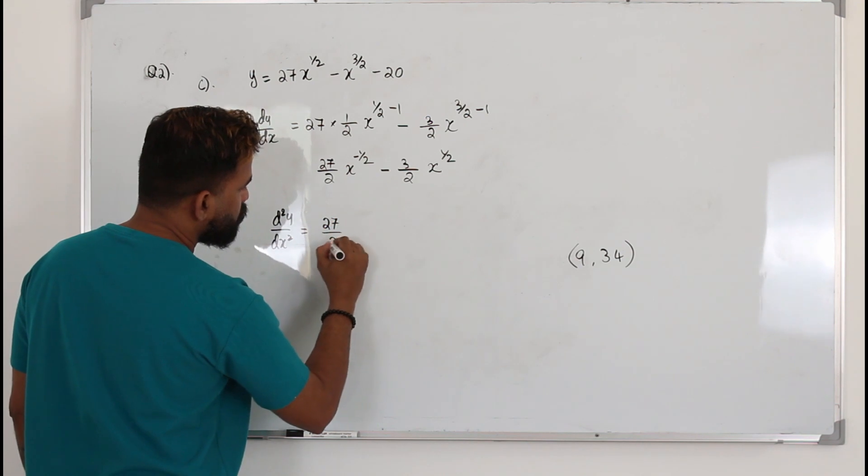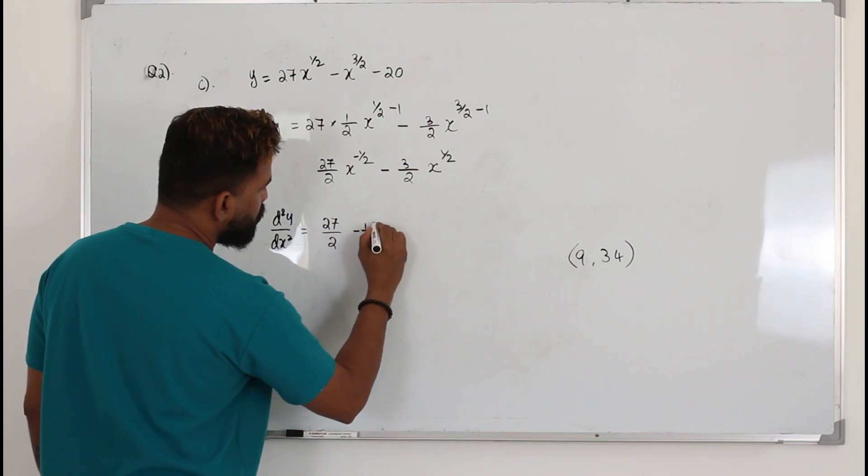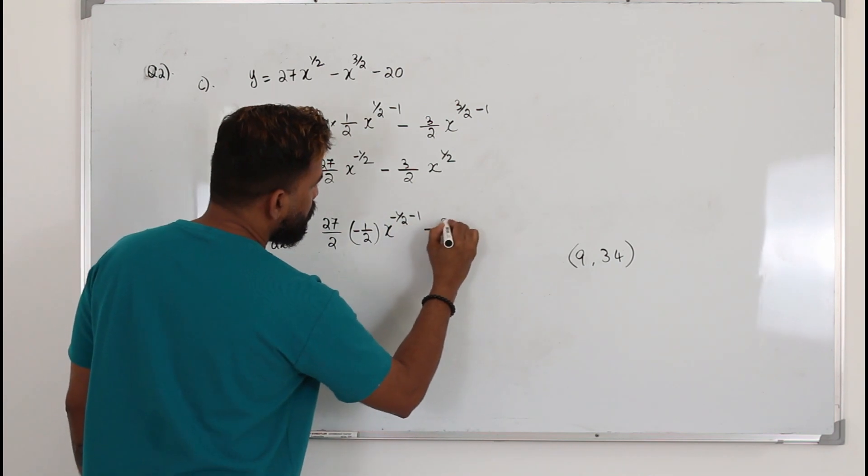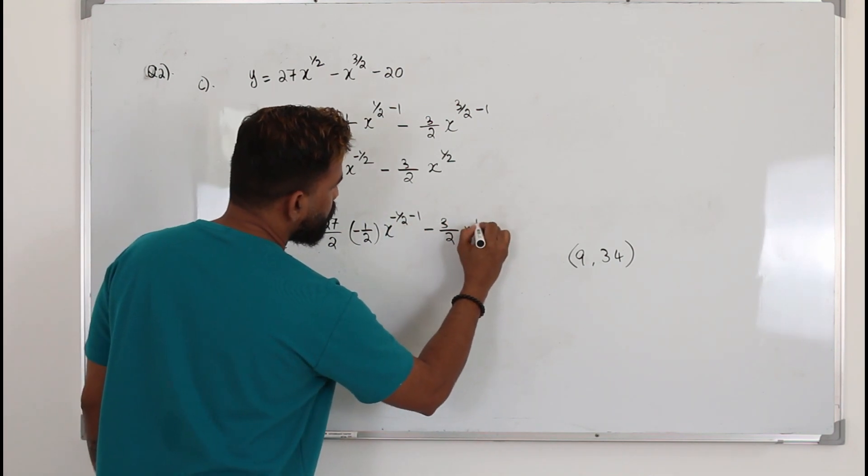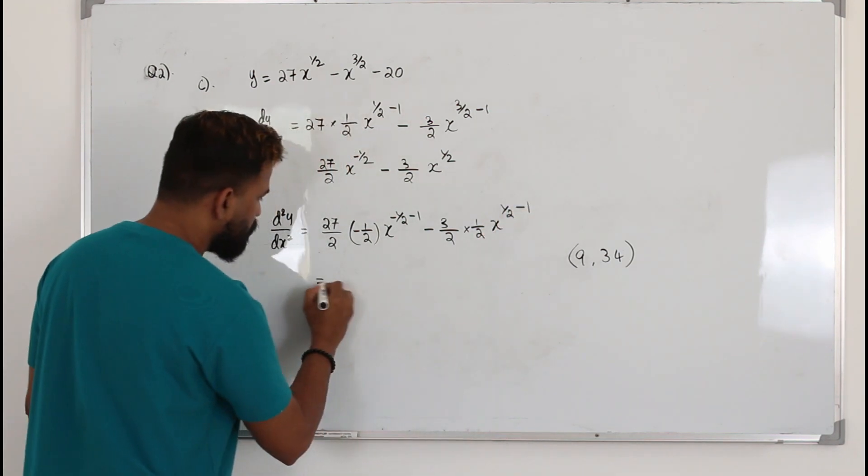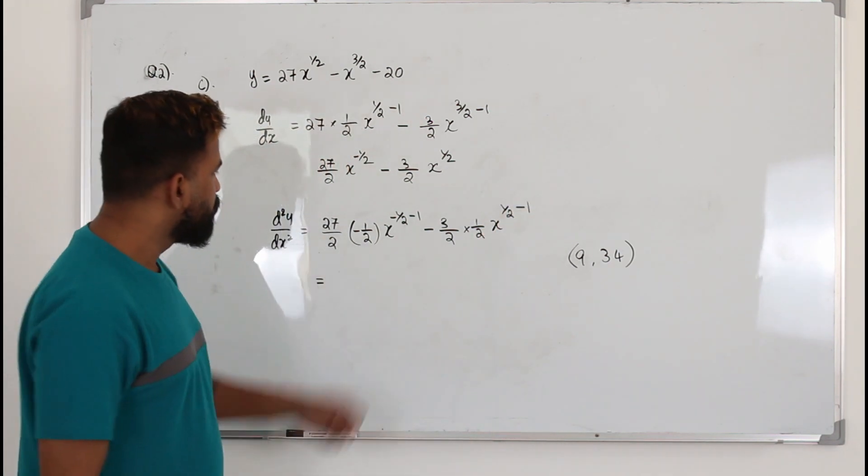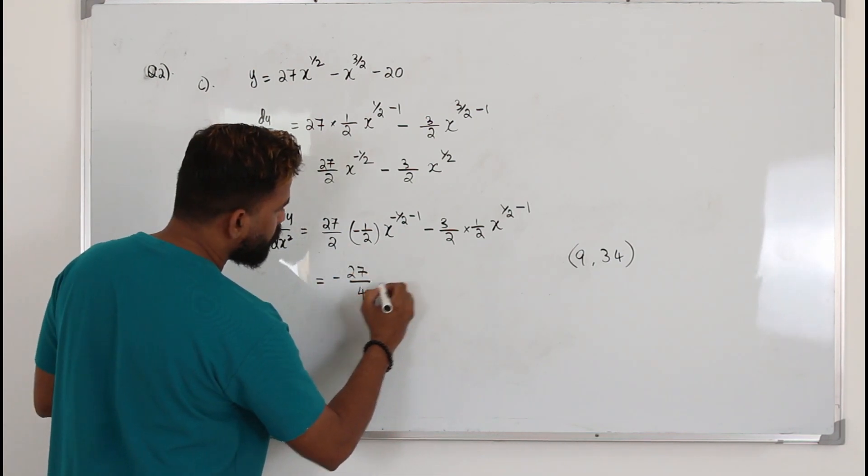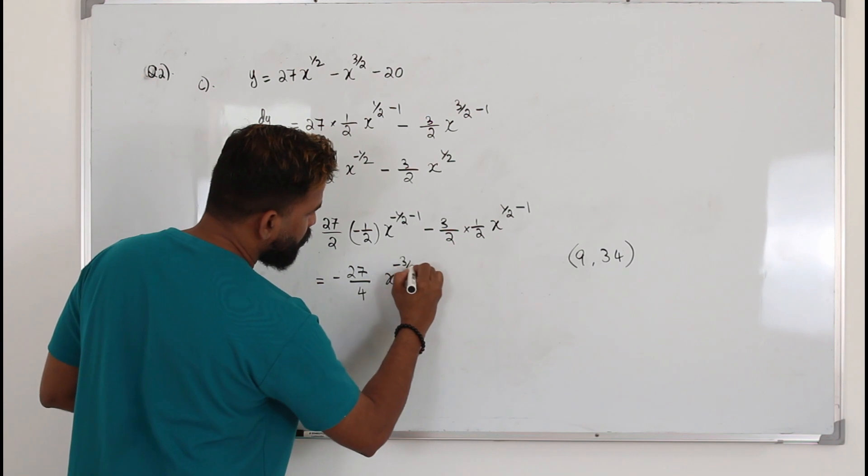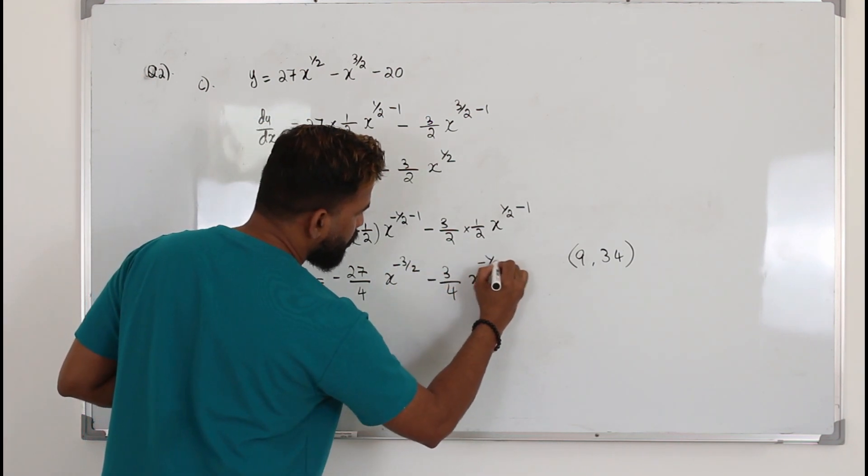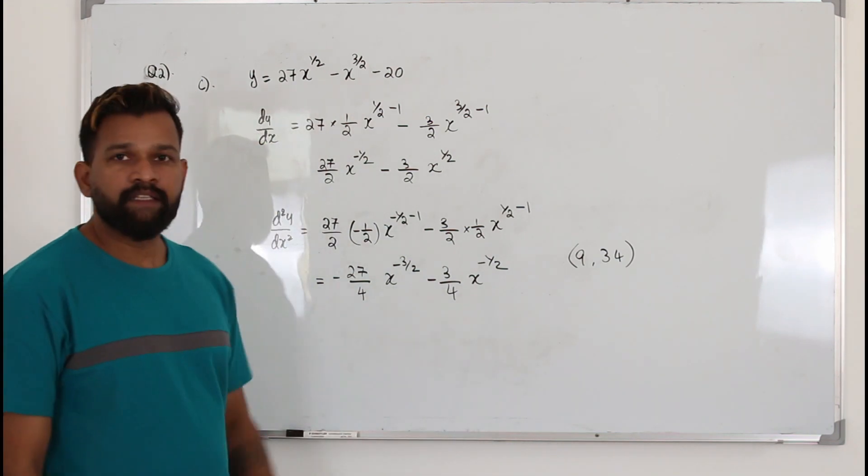27 over 2, negative half x power negative half minus 1, minus 3 over 2, half x power half minus 1. Simplify this. Negative 27 over 4 x power negative 3 over 2, minus 3 over 4 x power negative half. That's the second derivative.